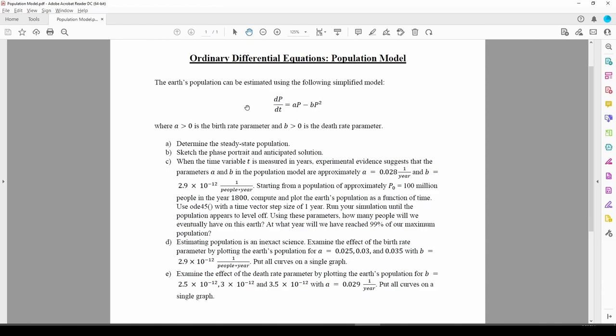This ODE describes the population of the Earth over time. It's a function of two positive parameters, a and b, which represent the birth and death rates, respectively.